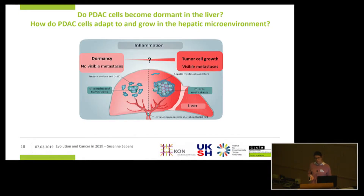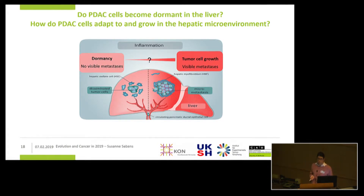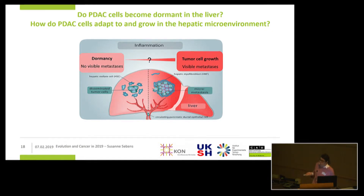When we started the project, there was almost nothing known with respect to dormancy in this tumor entity. We asked the question: do PDAC cells become dormant in the liver? And if so, how do these cells adapt to and grow in this new microenvironment? We postulated that inflammation is an important trigger, boosting or changing this dormant stage into a proliferative stage and thereby boosting metastatic outgrowth.